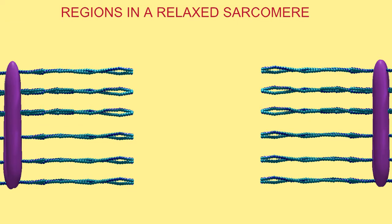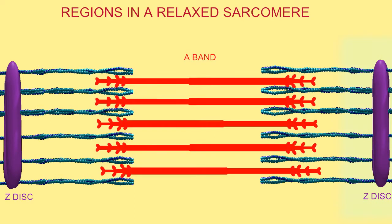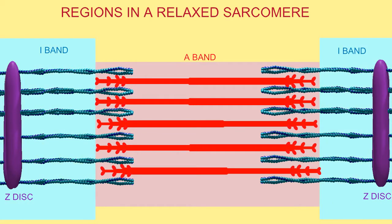Microscopic images of sarcomeres depict a number of similarities. The Z-discs are visible and mark the boundaries of sarcomeres in both resting and contracting muscle fibers. The A-band is darker, where the thick myosin filaments are located, and the I-band, where there is no myosin and only the thinner actin filaments, is lighter in color.